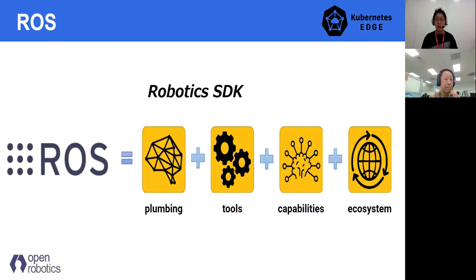Let me introduce quickly the Robot Operating System, called ROS. From a Kubernetes perspective, ROS is one of the runtime frameworks and SDKs. The Robot Operating System is a set of software libraries and tools that help you build your robot application — from drivers to state-of-the-art algorithms — with powerful developer tools. ROS has what you need for your next robotics project, and it's all open source. What ROS provides is not only an SDK, but also simulation tools, which are really important and useful for robot application development.